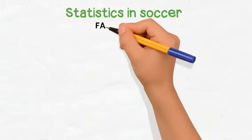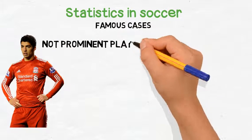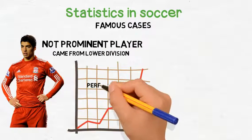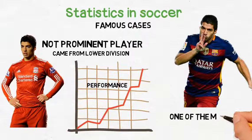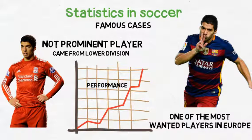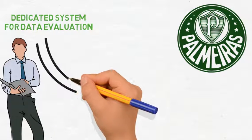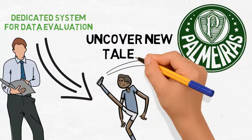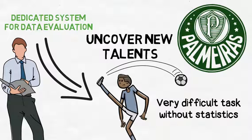A pretty famous and interesting case was the one involving Suarez, a well-known soccer player now, but who was not that prominent when he was picked up by Liverpool for a cheap price. This was because Suarez had come from a small team in a lower division. Later, Suarez became one of the key players in Liverpool and is one of the most wanted players in European soccer clubs today. Many Brazilian teams, such as Palmeiras, already have a system dedicated to evaluating data of players from many teams around Brazil. This system allows Palmeiras to uncover new talents which can be hidden within smaller and unknown teams. Without statistics, this would be a very difficult task since the majority of the players do not have the media's attention.